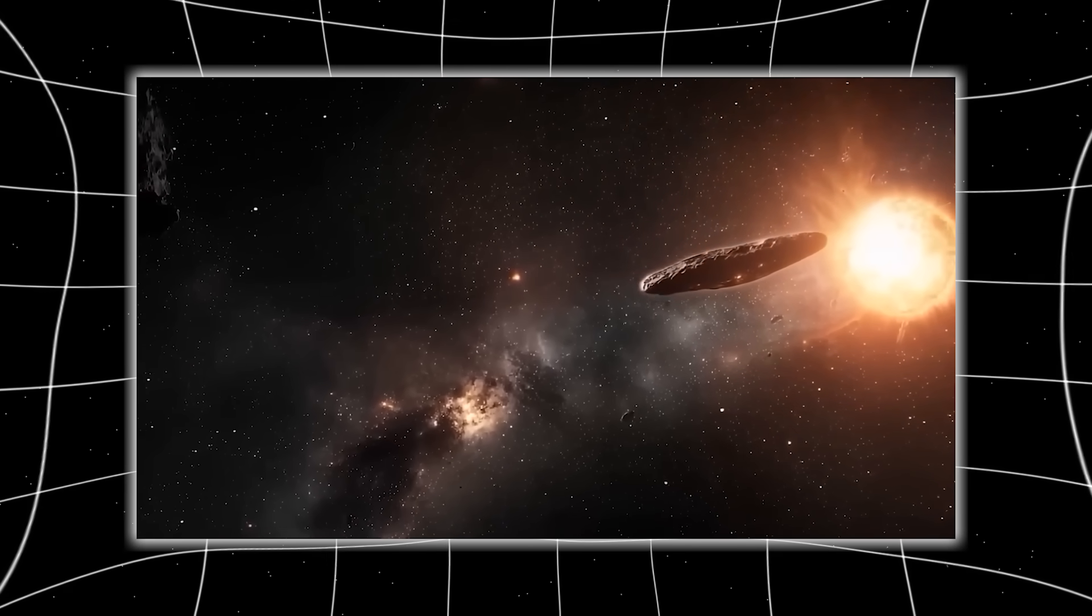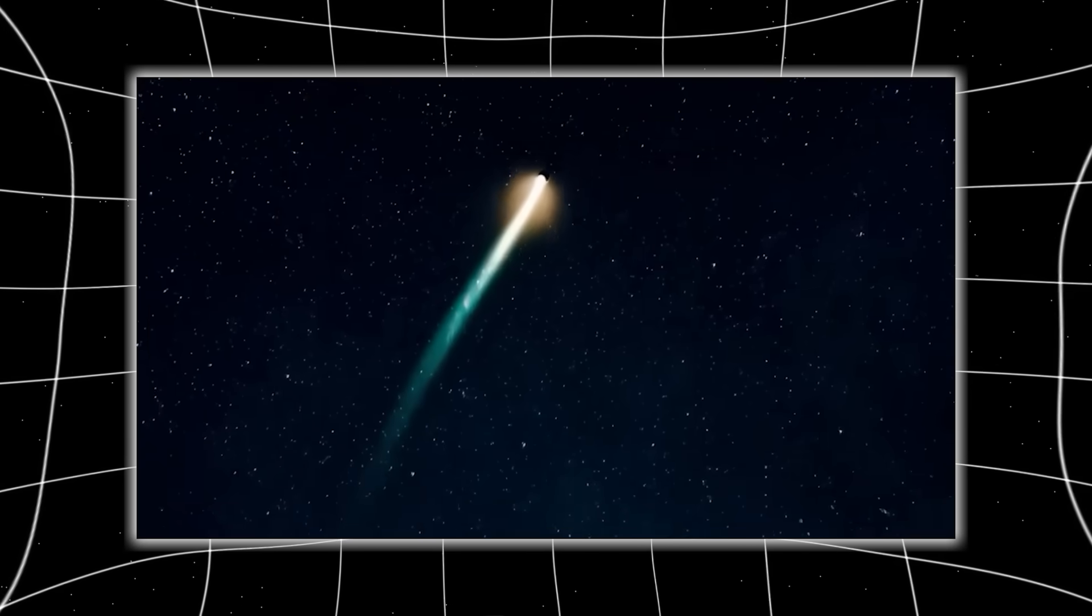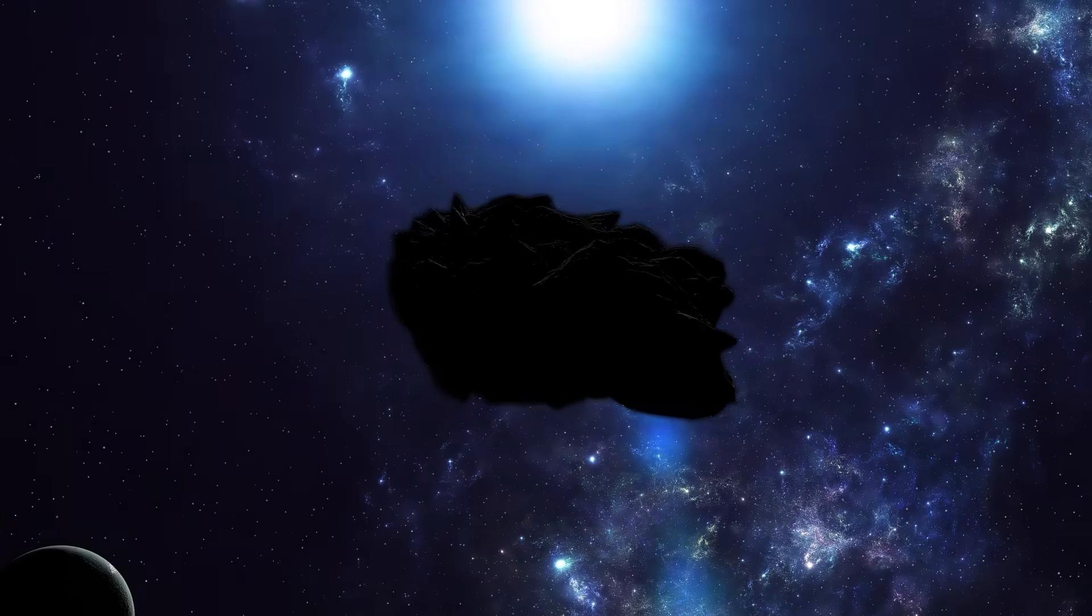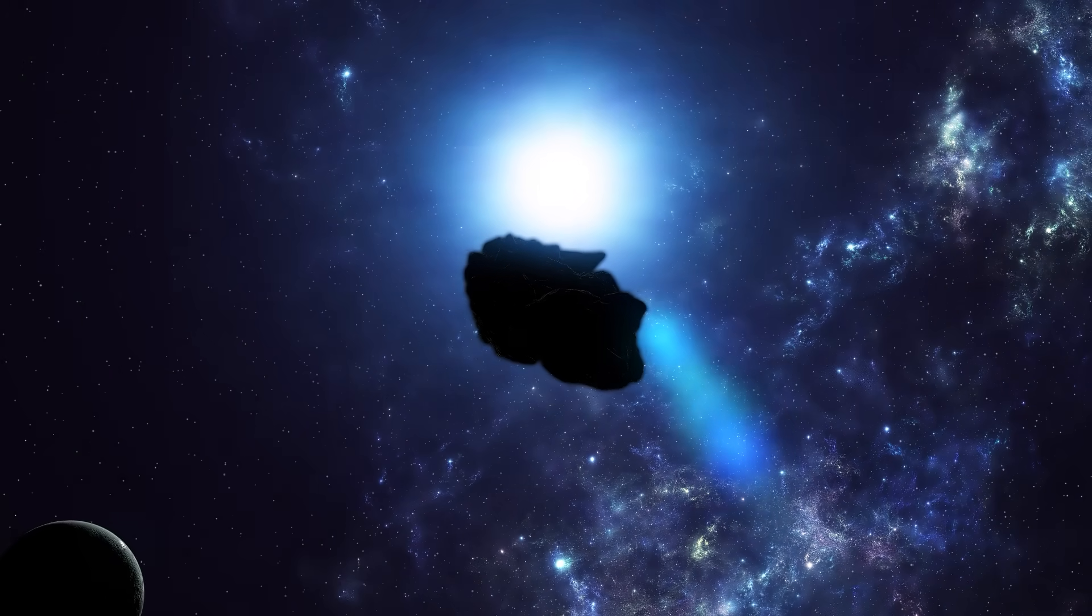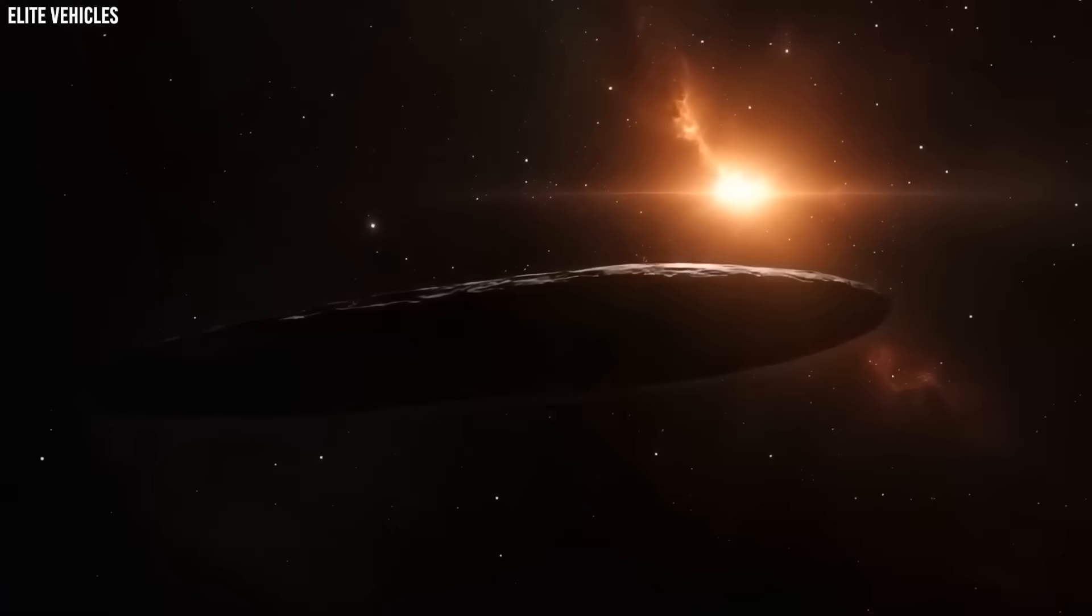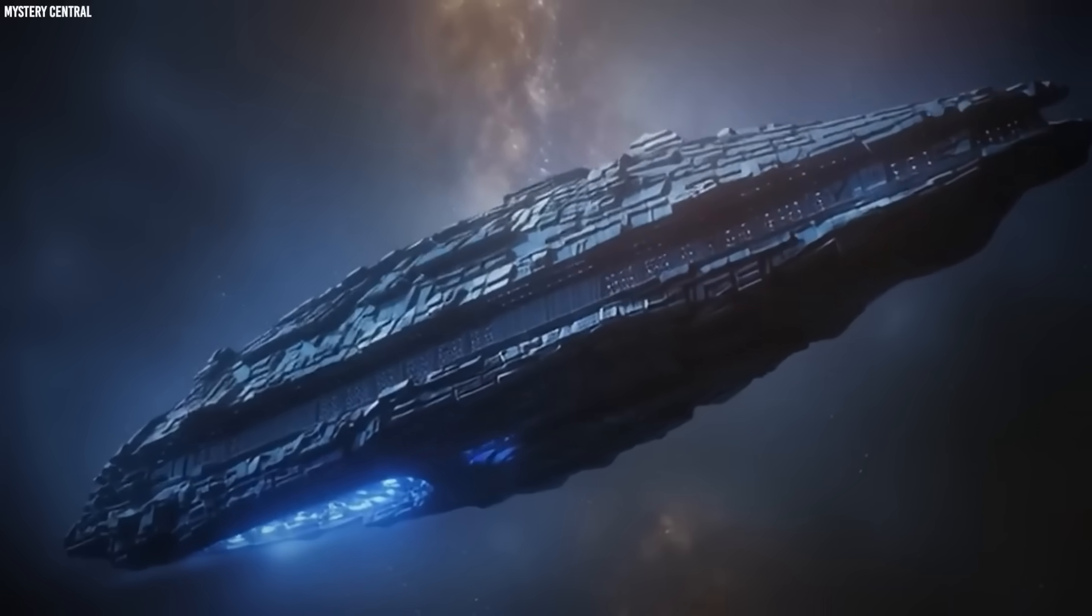To some, it's a simple anomaly. To others, it's something far greater. Harvard astrophysicist Avi Loeb calls it a wake-up call from the cosmos. Because if these images are what they appear to be, a body accelerating through the solar system without ejecting anything, then 3i Atlas may not be a comet at all. It may be something built.